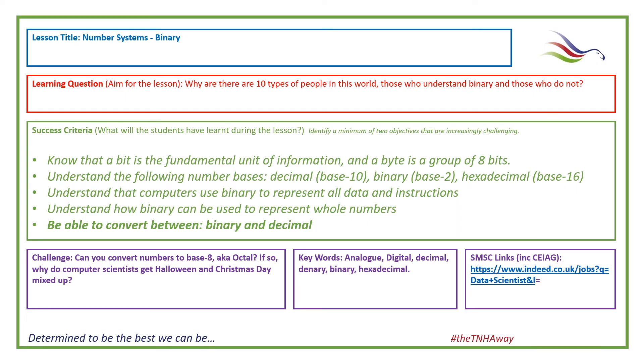That takes us to the end of this really section for number systems around binary. You should know that binary is made up of bits, the ones and zeros. The 8 of those is a byte. You should know about the 3 number systems we use in computer science. There are others, but the ones that you need to know about for GCSE: it's denary, a decimal, base 10, binary, base 2, and hex, base 16. You need to know that computers use digital data to store all data instructions and that digital data is in binary, the ones and zeros.